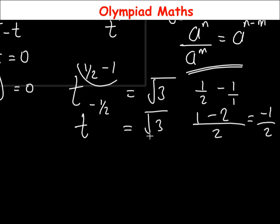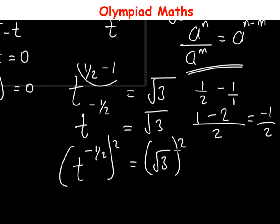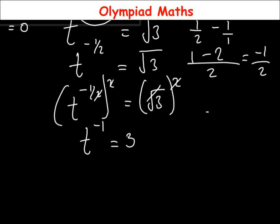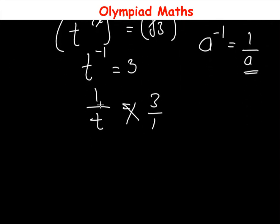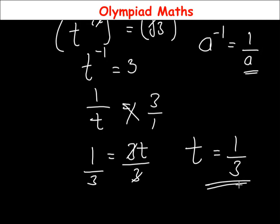To remove the square root, we square both sides: (t^(−1/2))² equals (√3)². The square cancels the square root on the right giving 3, and minus 1/2 times 2 gives minus 1, so t^(−1) equals 3. Using the rule a^(−1) equals 1/a, this becomes 1/t equals 3. Writing 3 as 3/1 and cross multiplying, then dividing both sides by 3, gives t equals 1/3.